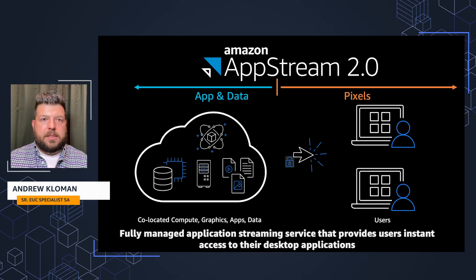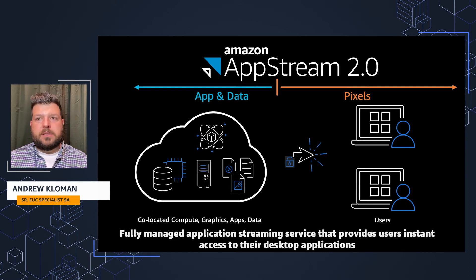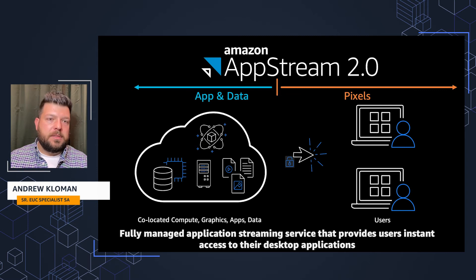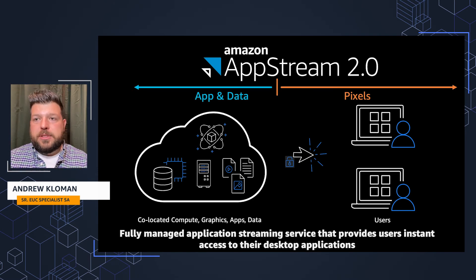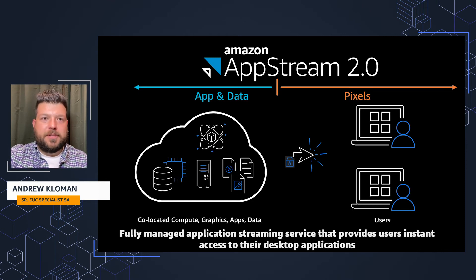When we talk about encryption at rest and encryption in transit, with a non-persistent ephemeral environment like Amazon AppStream 2.0 provides, everything is in memory. There's no need to encrypt the hard drive of the AppStream instance because it's going to be gone — there's no persistent data at rest that would be of concern. Pixel streaming is a great tool to enable a zero trust story, and there are many more key aspects to discuss.